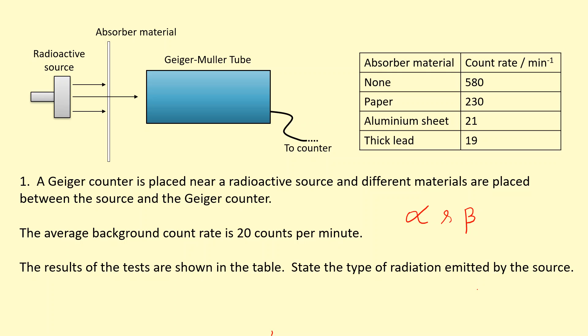And then when we add a thick lead, it's still roughly equal to the background count rate. That means this source isn't emitting any gamma because the gamma would have gone through the thin sheet. But then we would notice a much more significant drop when we add the lead, but we can notice that we're already at the background radiation count rate. So that means there's no gamma being emitted.